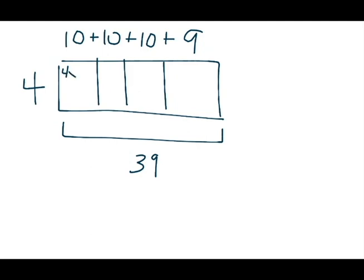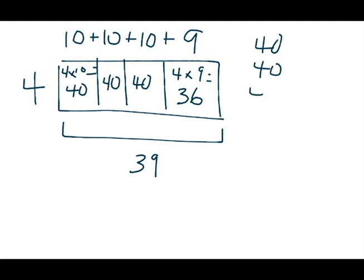4 times 10 equals 40. Same problem here. I'm just going to write 40 again, 40 again. And 4 times 9 for the last one is 36. Over to the right, I'm going to write all of those factors. 40, 40, 40, 36. I add them all together and I get the same answer, 156 miles total.